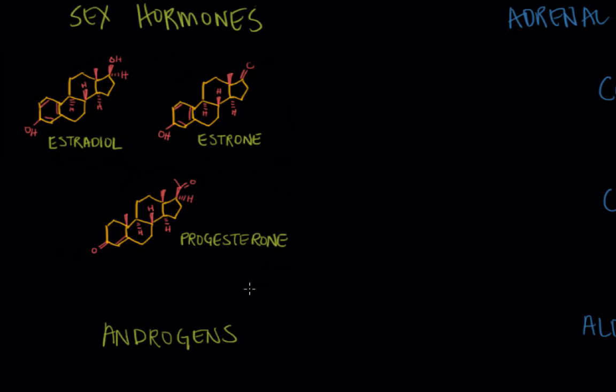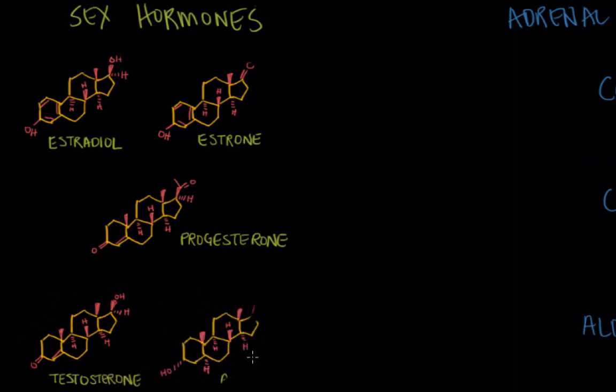Then we have androgens. We have testosterone and androsterone and similarly to the estrogens, those regulate the secondary sex characteristics but more so in males and they are predominantly made in the testes.